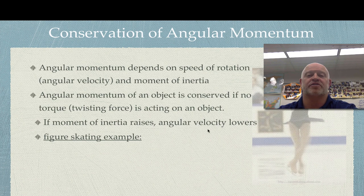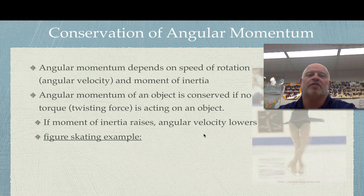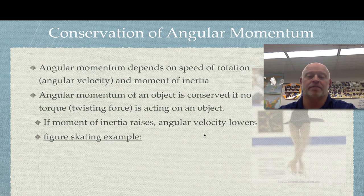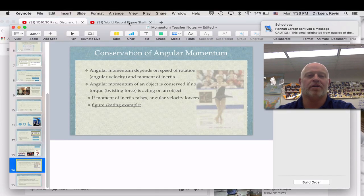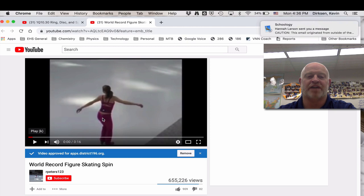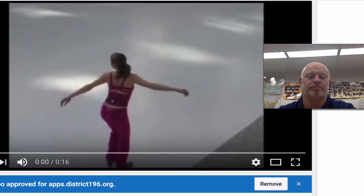Figure skaters have figured this out really well. It's amazing how a figure skater can go from skating a relatively smooth wide arc on the ice, jump in the air, and instantly be spinning at hundreds of RPMs — that blows my mind until you apply the physics behind it. Let's take a look at a figure skater who actually set the world record in terms of how fast she can get herself to rotate.